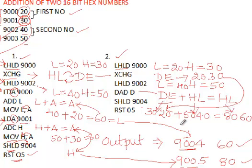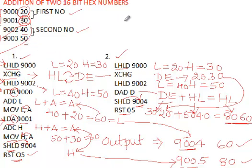The addition of 20-30 and 40-50 gives the result 60-80, which is stored in HL. This answer is then stored to addresses 9004 and 9005 using the SHLD instruction. The program is then halted using RST 5. This is the addition of two 16-bit numbers using both the normal method and the DAD instruction method in 8085 microprocessor assembly language.